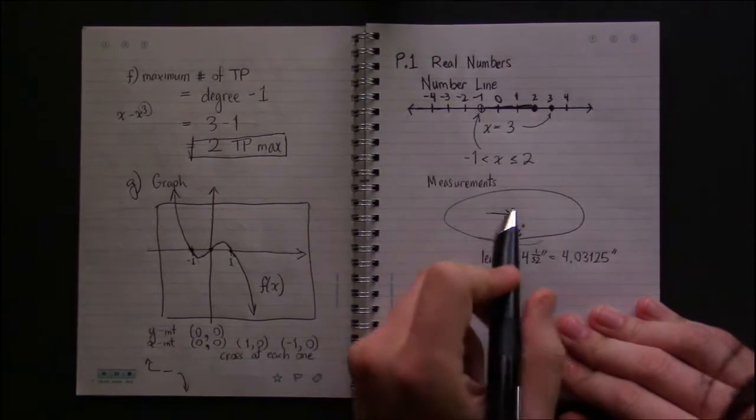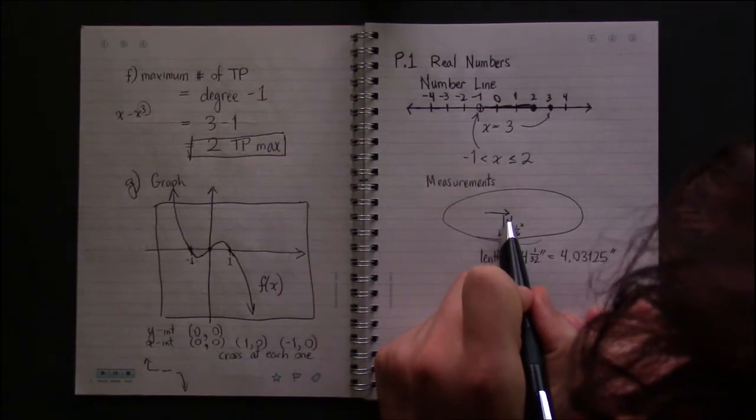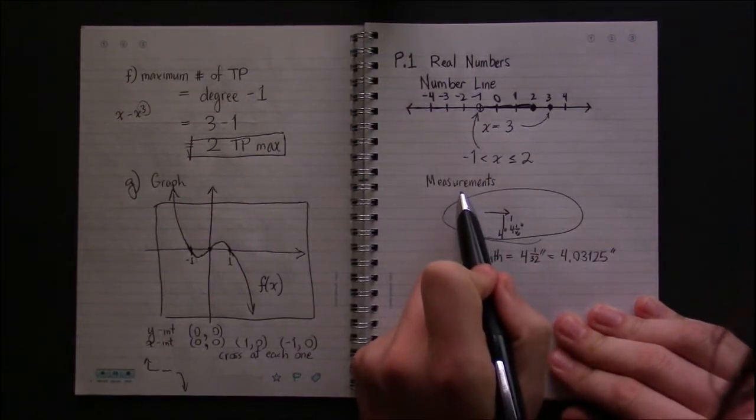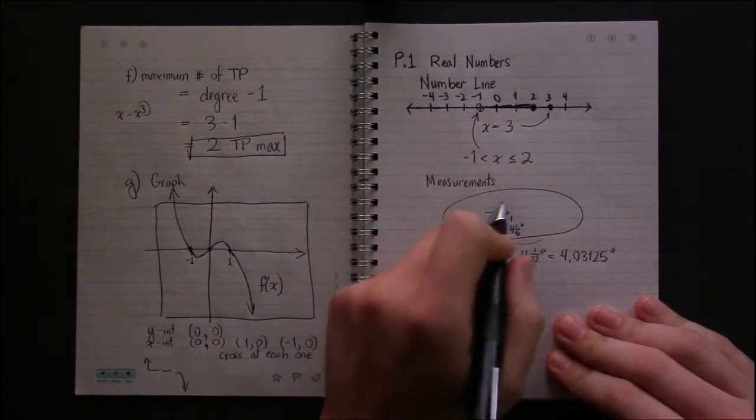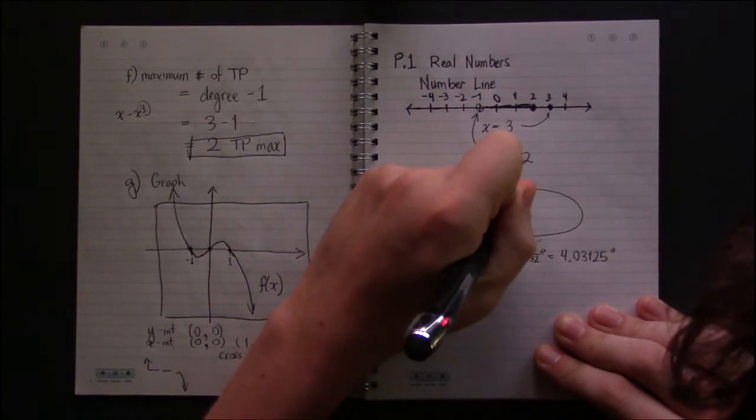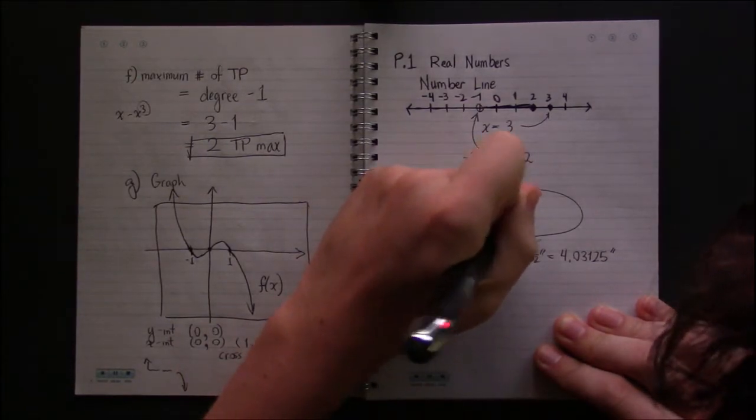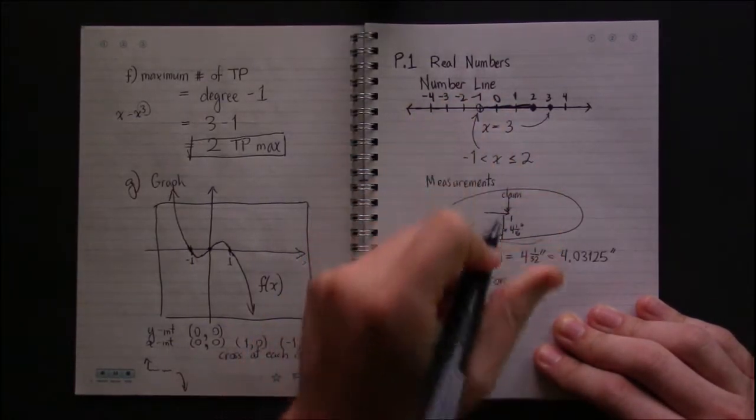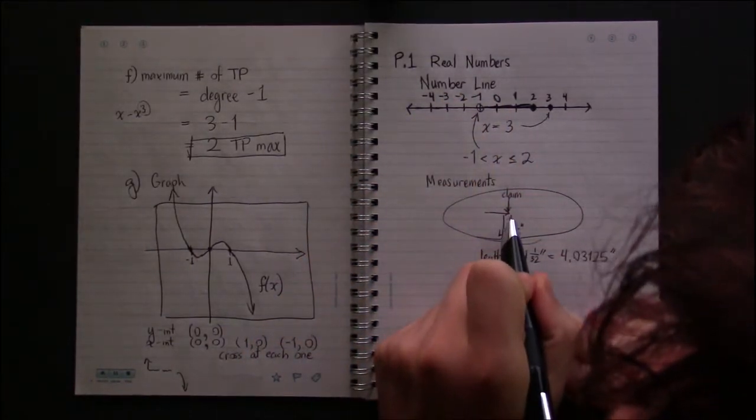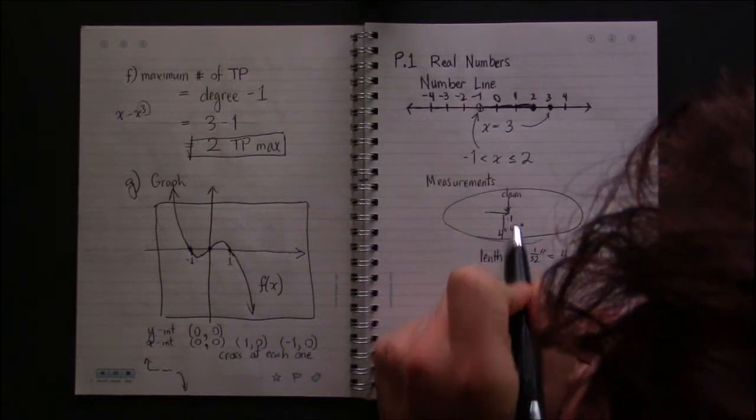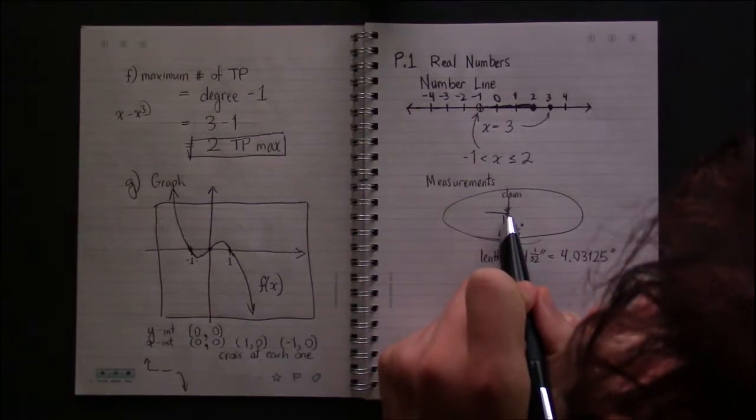But that's not the actual length because it's not exactly halfway between these two. You can't make an exact measurement. Measurements always come with an error. So we're claiming that the length is exactly halfway between these two.